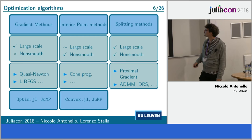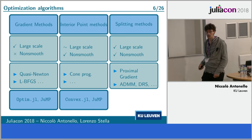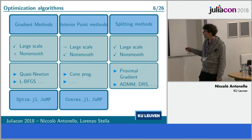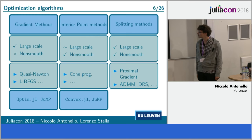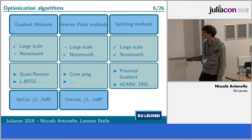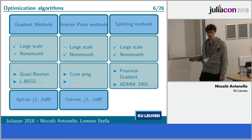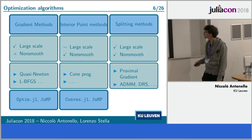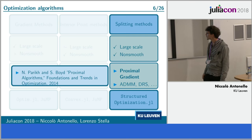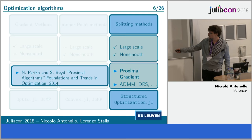A newer set of algorithms with renewed interest is splitting methods. The main reason is that they can deal with non-smooth cost functions, and they're typically first-order methods suited for large-scale problems. Among these — and there are many new methods appearing in research — we have the proximal gradient method, ADMM, Douglas-Rachford splitting, and many others. Our package deals with this last set of algorithms, in particular the proximal gradient methods. If you want a review, I suggest this paper.